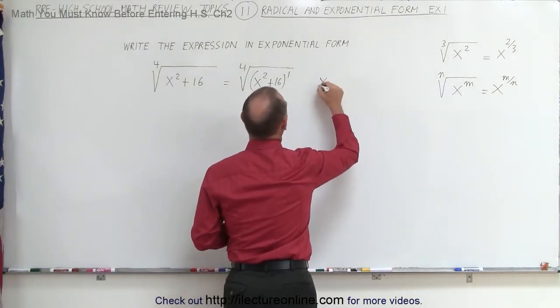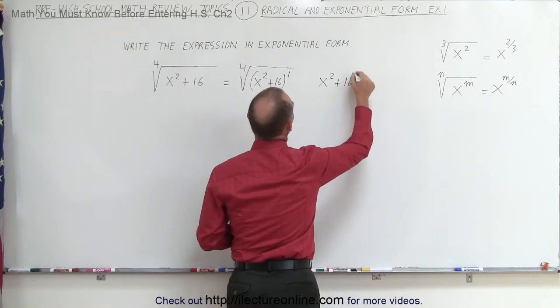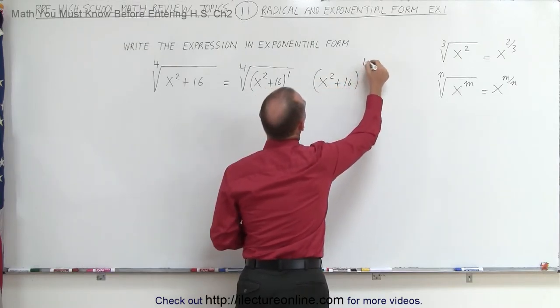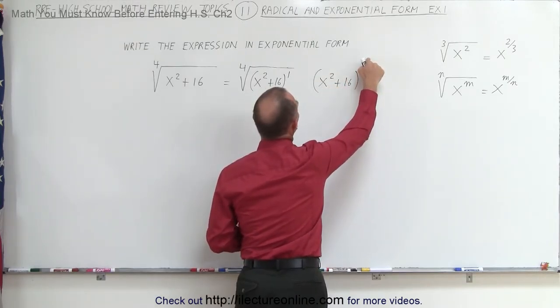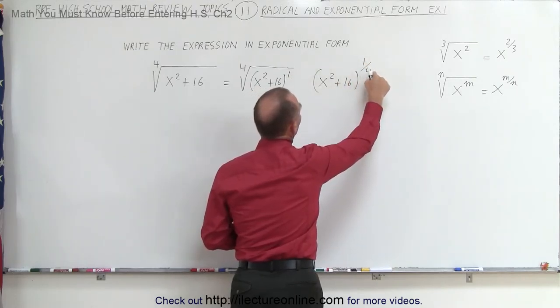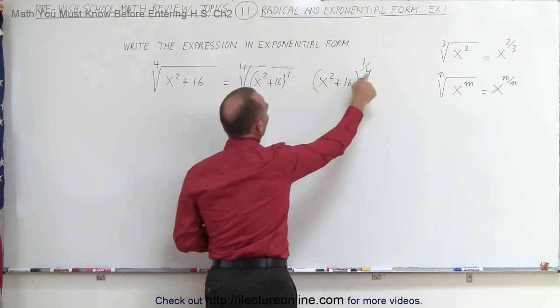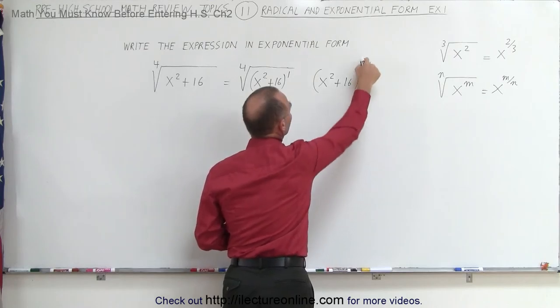This then becomes the quantity x squared plus 16 raised to the one-fourth power. Remember, the number in the numerator is the power, and the number in the denominator is the root. So it's the fourth root of this quantity to the first power.